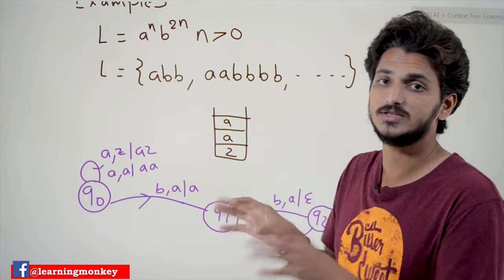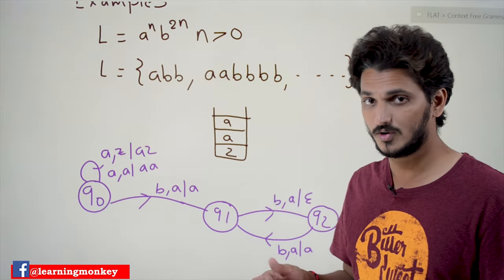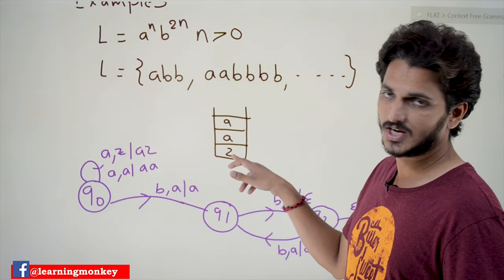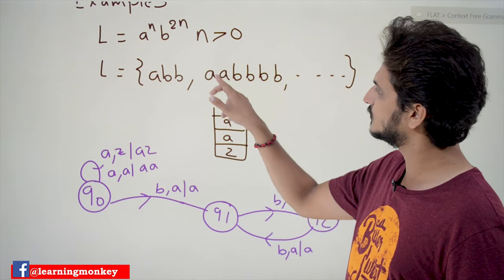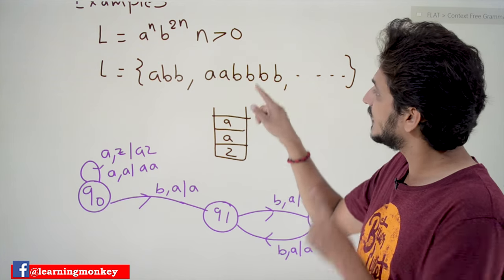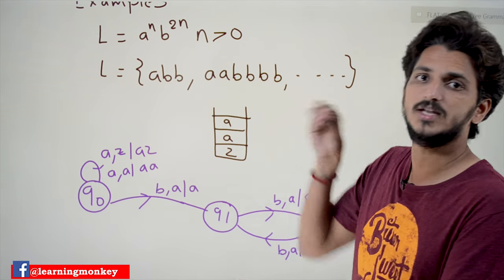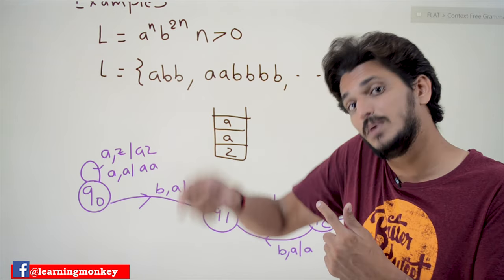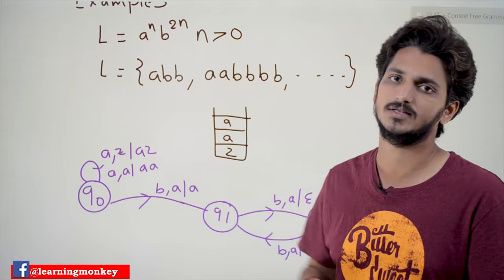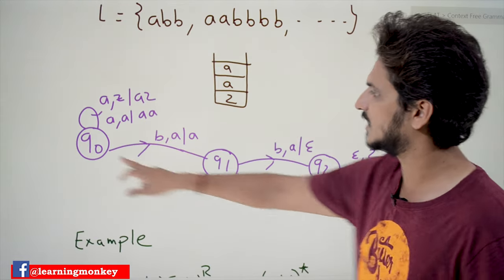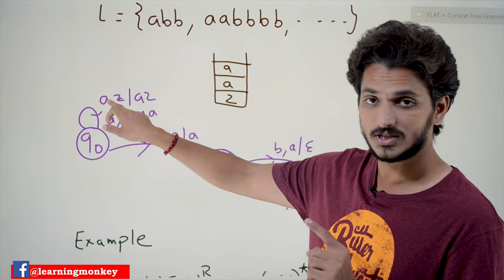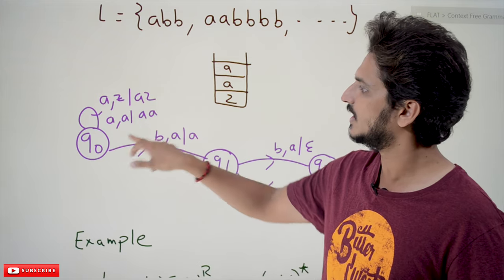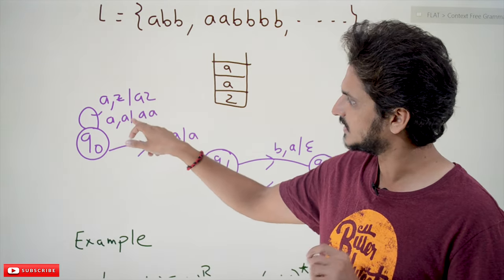Whenever you see an 'a', push it onto the stack. In our pushdown automata we have a stack memory space, and the initial stack top symbol is Z. So whenever you see an 'a', push it. If you see another 'a', push it again. Whenever you see two b's, pop one 'a'. For every second 'b' you pop one 'a' — that is the logic. We start from q0. On q0, if the input symbol is 'a' and the stack top is Z, push 'a' — giving stack top AZ.